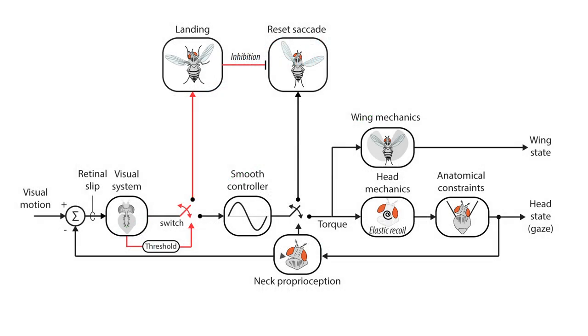Altogether, our findings reveal the dynamics and control of head saccades in flies and uncover an active vision strategy that may have far-reaching implications in both biological vision and artificial vision systems.